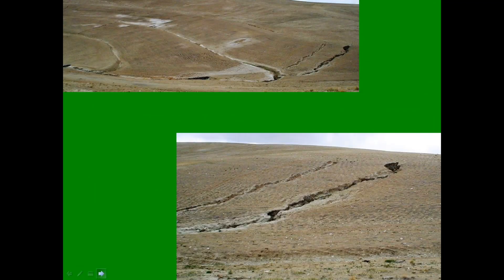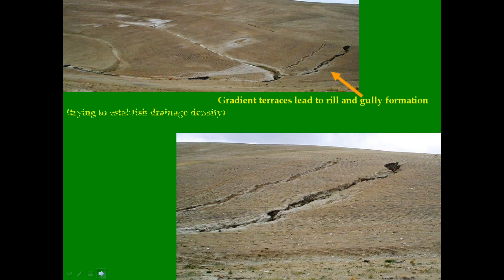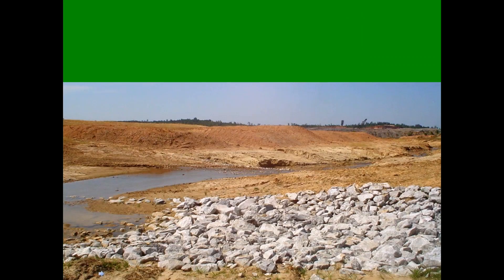Let's look at common reclamation problems solved by the Geofluv method. Traditional gradient terrace and down-drain reclamation does not have the drainage density that nature develops to make a hydrologic balance. The gullies that develop are natural erosion processes establishing the needed drainage density, resulting in expensive maintenance and sediment loss. Here we have a mine reclamation that tried to make natural landforms without using the Geofluv method and is having consistent erosion problems. They tried hauling in rocks to control the erosion but did not address the cause of their problems.